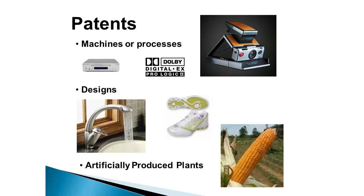Patents can protect not just machines but also processes. For example, Dolby is a company that designs sound systems. If you have a home theater with Dolby digital surround sound, that would be protected by a patent held by Dolby. Patents can also protect designs — the actual appearance of an item. For example, Kohler faucets has patents on many of its faucet designs, and sneaker companies can patent various shoe designs.